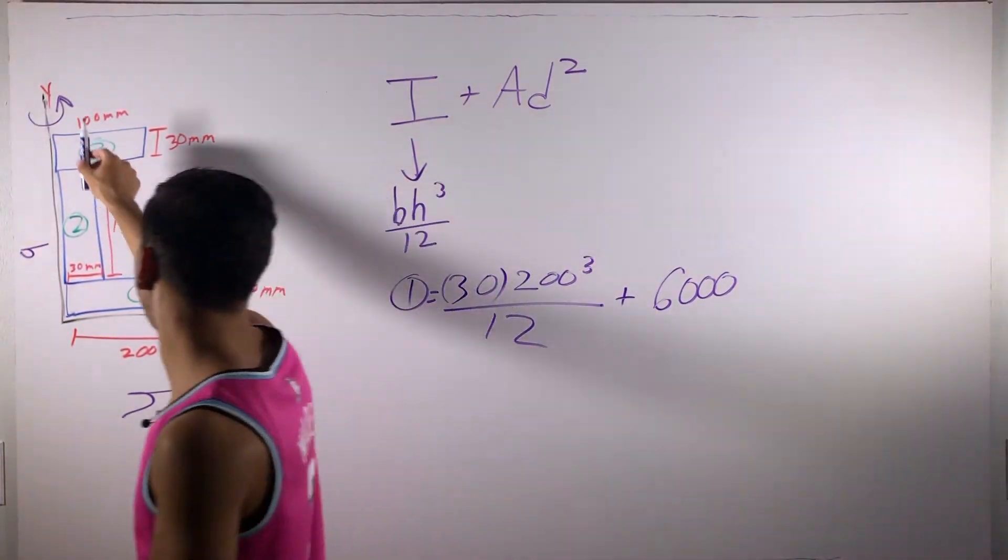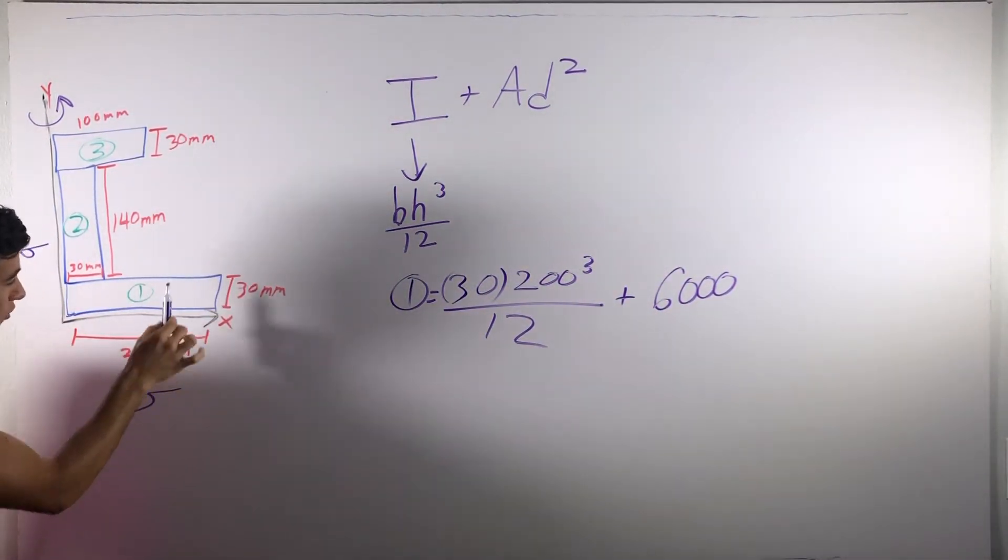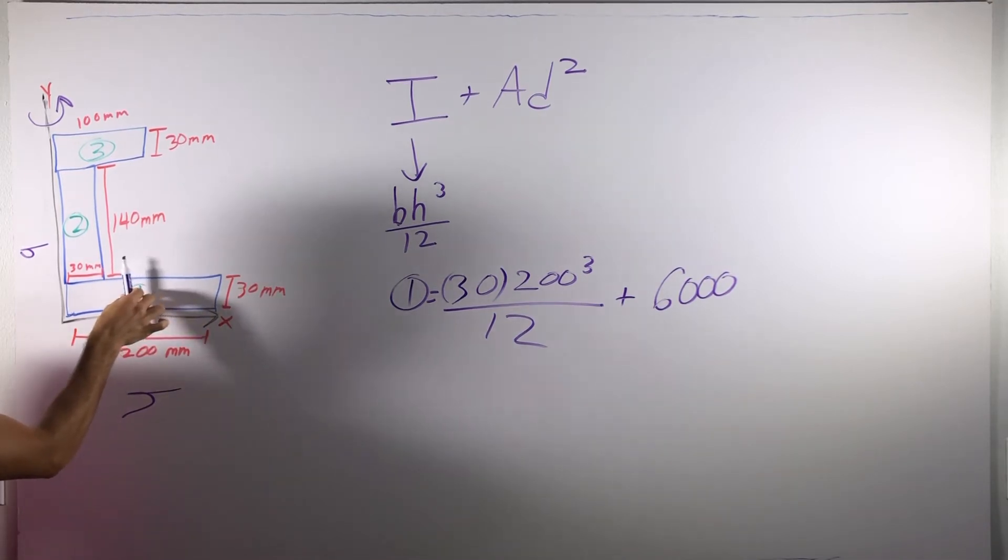So, for example, since we're rotating about the y-axis, we're going to look at the centroids this way. Since it's just a rectangle, it's just going to be half of the height. Right?